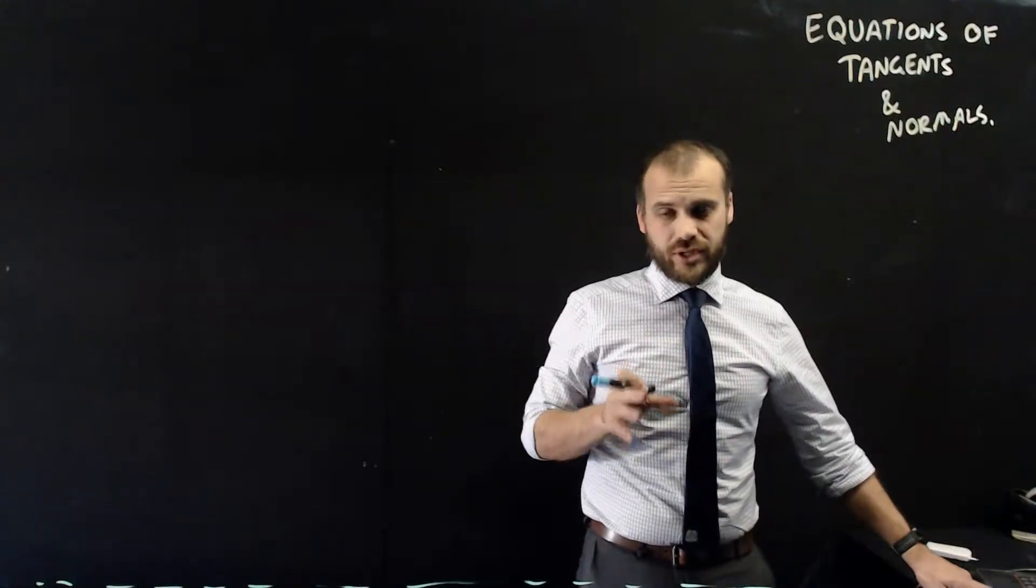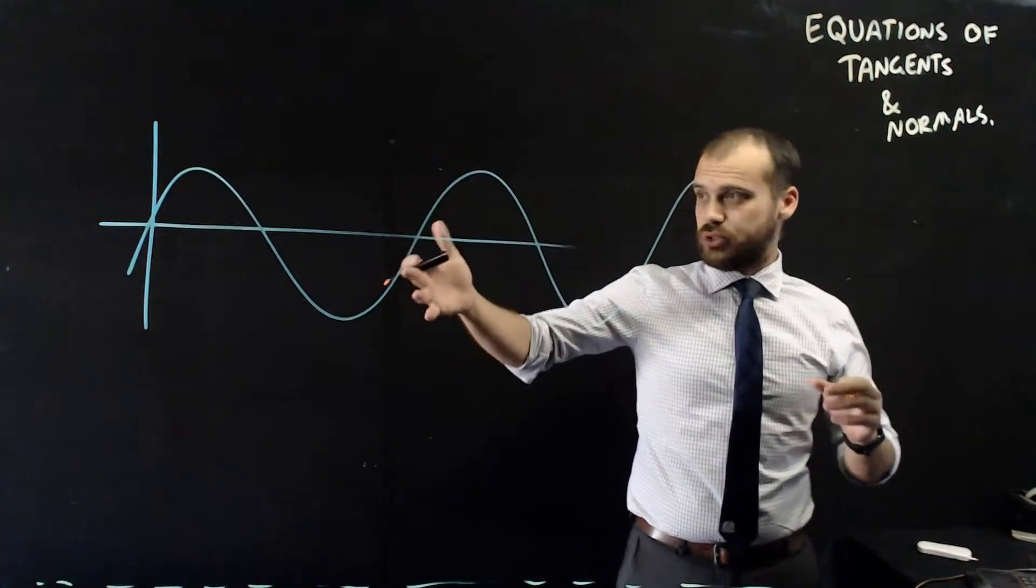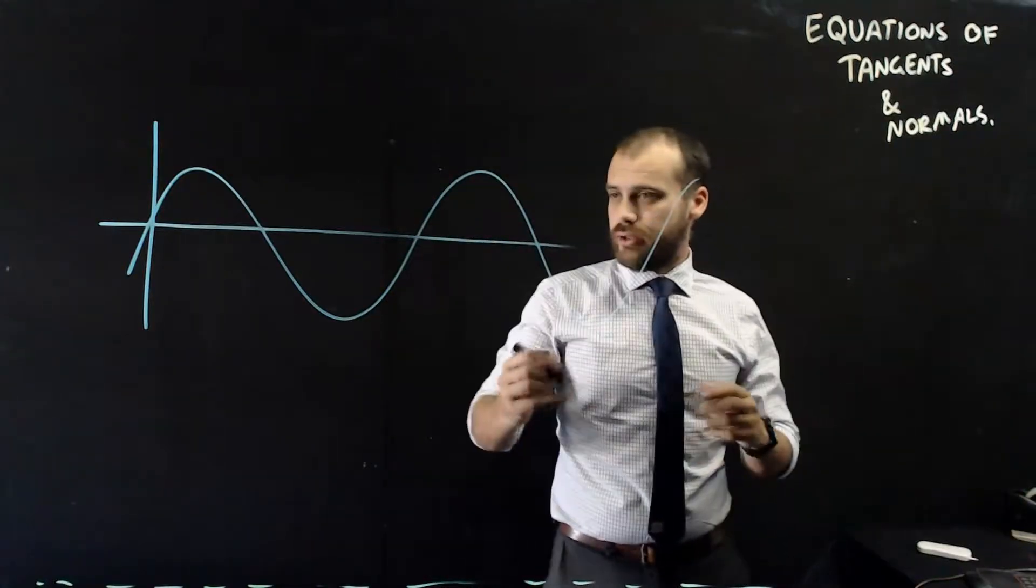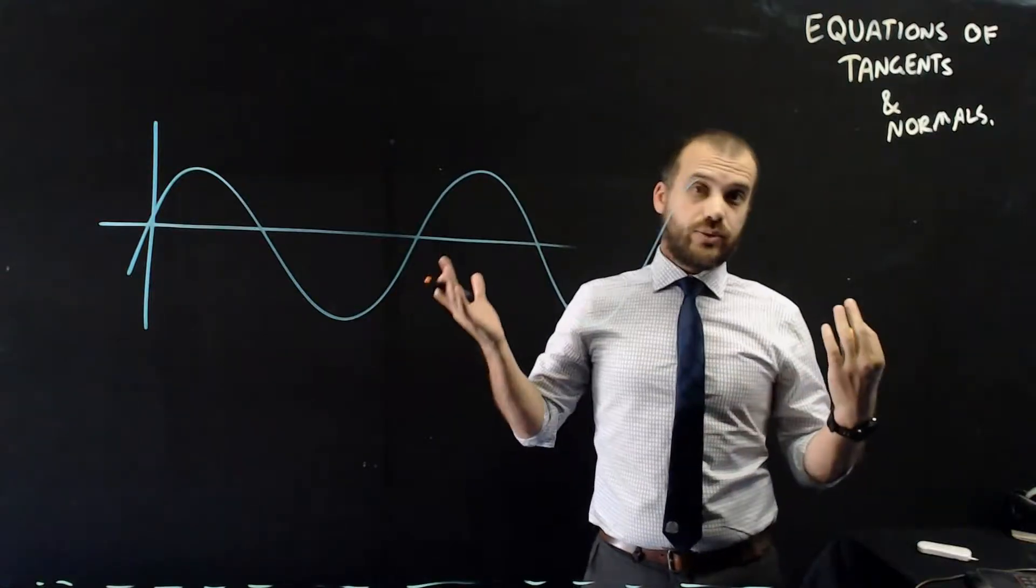Now, I'm going to draw a picture of that first. Let's imagine an equation. You can see this is our equation. It looks like some sort of sine curve. Now, you might get asked, find the tangent at x equals 5.